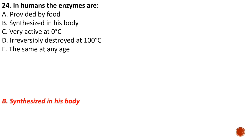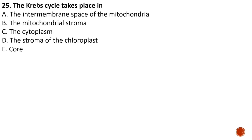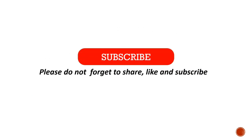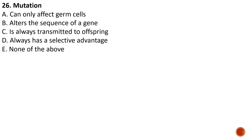Question number twenty-five: the Krebs cycle takes place in — A) the inter-membrane space of the mitochondria, B) the mitochondrial matrix, C) the cytoplasm, D) the stroma of the chloroplast. The correct answer is B — the mitochondrial matrix — which is the site where the Krebs cycle takes place. Question number twenty-six: mutation — the correct answer is B — it alters the sequence of a gene, which is exactly the definition of mutation.